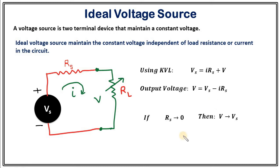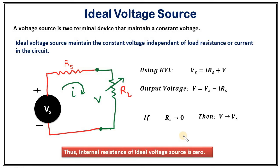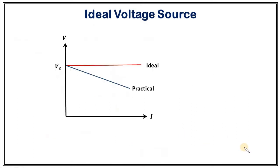In practical life we cannot make Rs equal to zero, so what we need to do is choose Rs as small as possible — Rs should be much much smaller than RL. Thus for an ideal voltage source, internal resistance is zero. If you draw the graph of voltage versus current, for the ideal voltage source you will see a line parallel to the I-axis, representing that voltage is always constant and equals Vs. But for the practical voltage source, the voltage gets smaller with an increase in current.